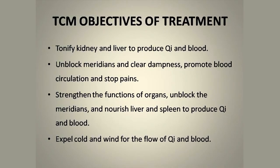The TCM objectives of treatment are: to tonify the kidney and liver to produce chi and blood; unblock the meridians; clear dampness; promote blood circulation and stop pain. It also helps to strengthen organ functions, nourish the liver and spleen to produce chi and blood, and expel cold and wind for the free flow of chi and blood.